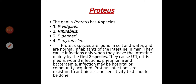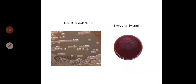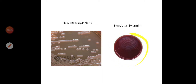Proteus infections are resistant to antibiotics, and sensitivity tests should be done. Proteus species produce colorless pale color colonies on MacConkey's agar because they are non-lactose fermenters. A very important characteristic feature of genus Proteus is the formation of what we call swarming phenomena — this is very characteristic of genus Proteus and is due to the rapid motility of genus Proteus.